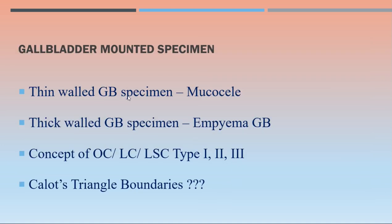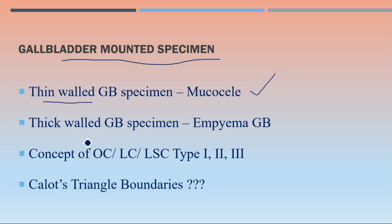Important points regarding the gallbladder mounted specimen: focus on the wall thickness. A thin-walled gallbladder specimen is usually suggestive of mucocele, while a thick-walled gallbladder is suggestive of empyema of the gallbladder. This distinction is important when assessing the specimen.